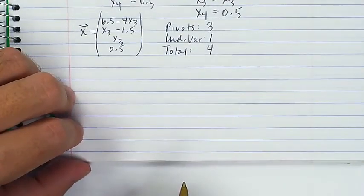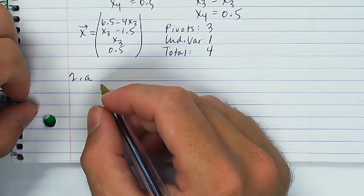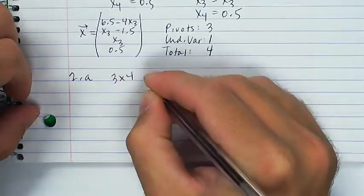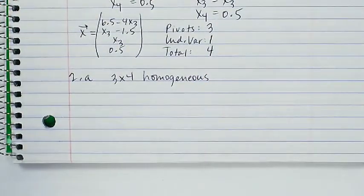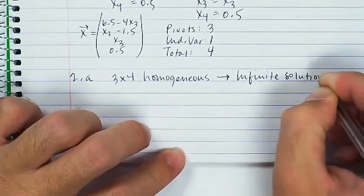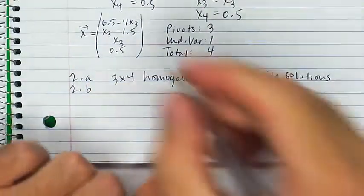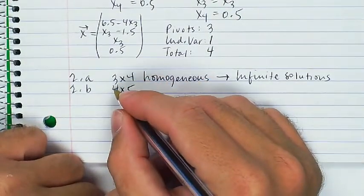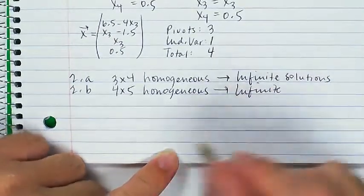Alright. Determine all possibilities for the solution set of the system of linear equations described. Okay. So, the first one is a 3x4 homogeneous. As we discussed in class, a system with fewer equations than variables, the only options are no solution or infinitely many solutions. And this is a homogeneous system, and all homogeneous systems are consistent. So, this means infinitely many solutions, which I might just call infinite, because there's a bunch of these to be. Homogeneous of 4 and 5, that's the exact same thing that's going to be infinite, because it's fewer equations than variables for the exact same reason as before.